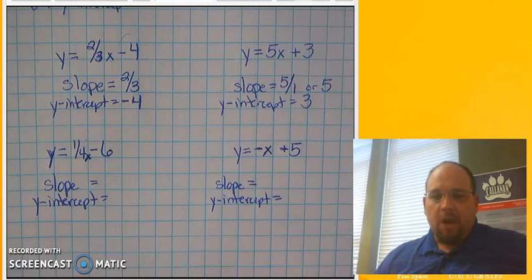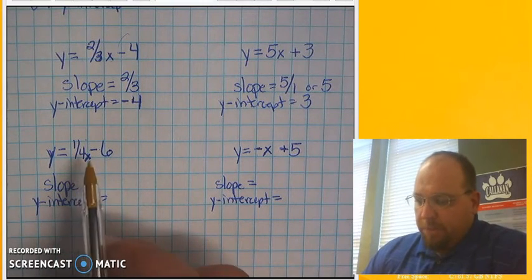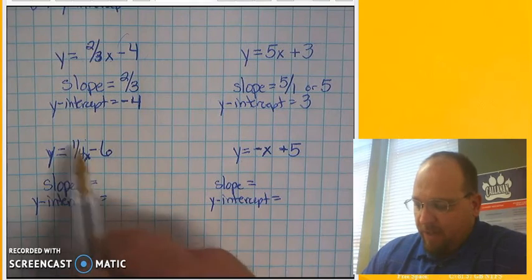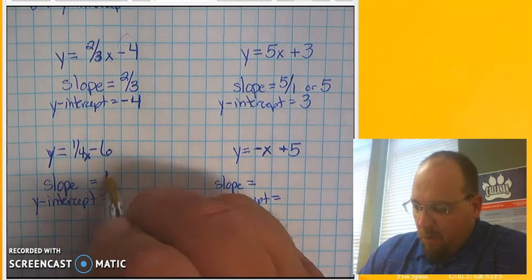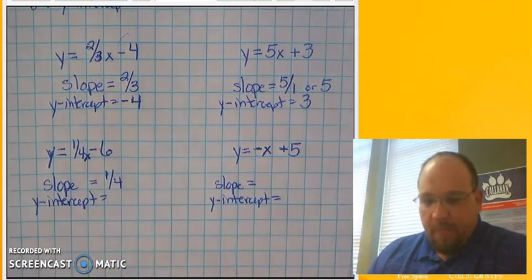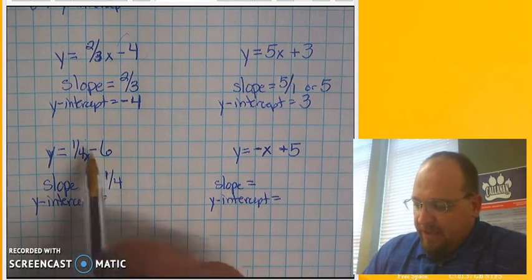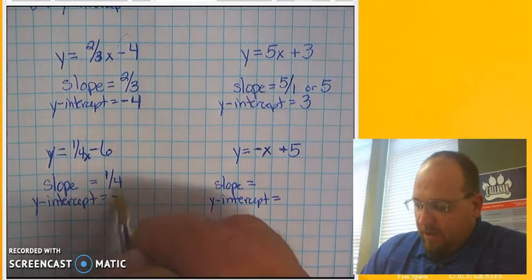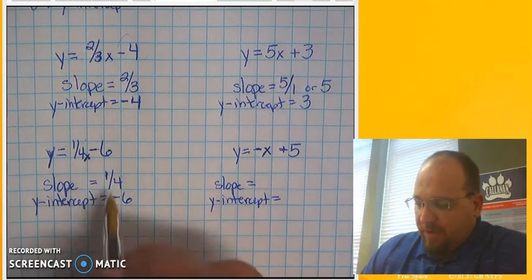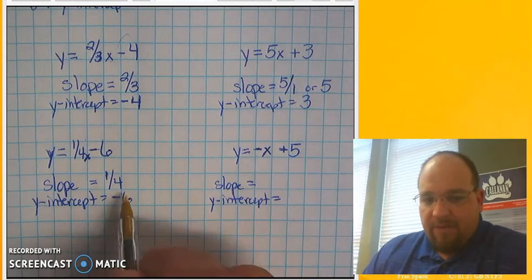All right. Let's check your work. The slope for the first problem here is going to be located right here in front of the x. So the slope is going to be this number, or in this case, this fraction of 1/4. The y intercept in this case is going to be a negative, because of subtraction, 6. So we have a slope of 1/4 and a y intercept of negative 6.